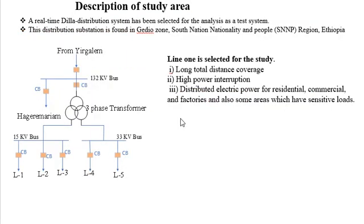Here is the description of the study area. The distribution system is located in Gedeo Zone, which is in the South Ethiopian National People's region. This is a single line diagram of the Dilla distribution substation, which receives power from the Irgalem substation and consists of a three-phase transformer and five outgoing feeders. Line one is selected for study due to its long total distance coverage, higher power interruption, and because it serves all customer types including residential, commercial, factory, as well as sensitive loads like banks and hospitals.